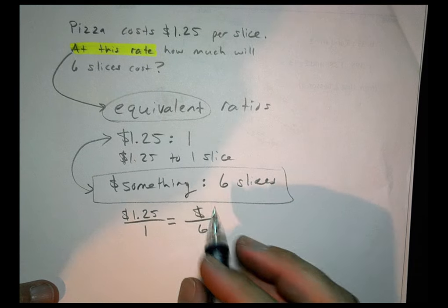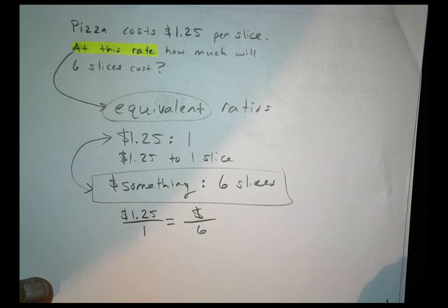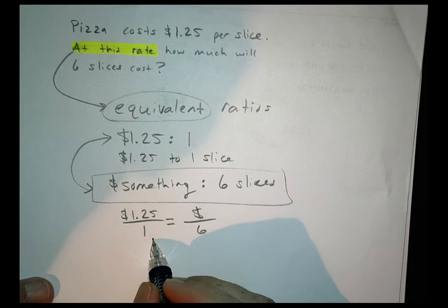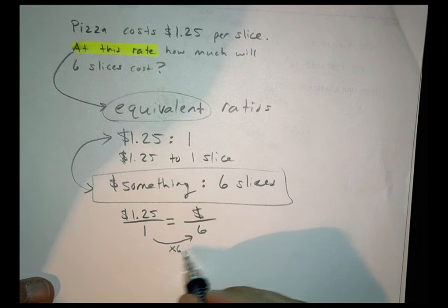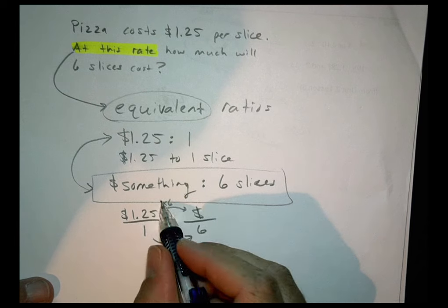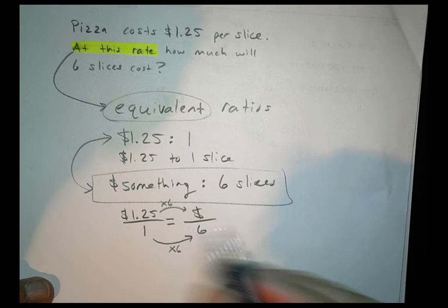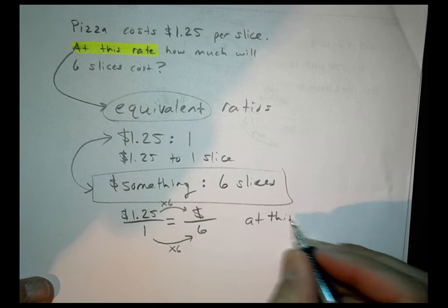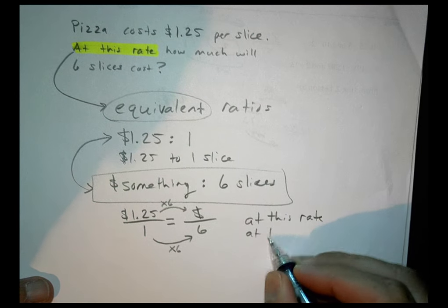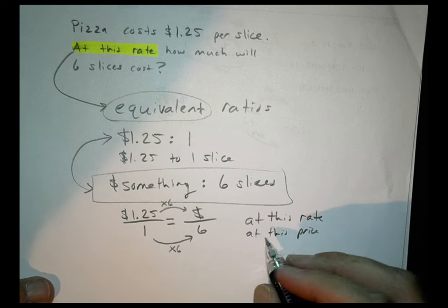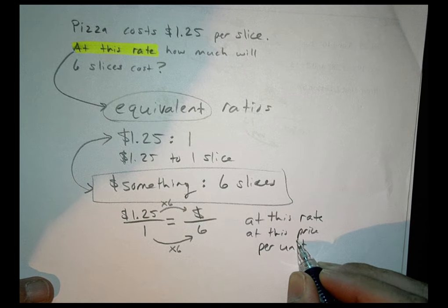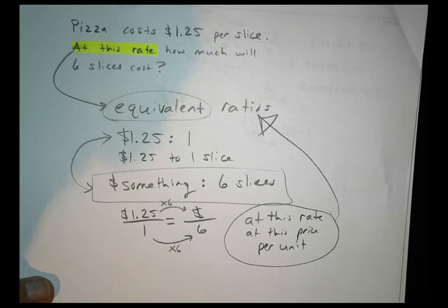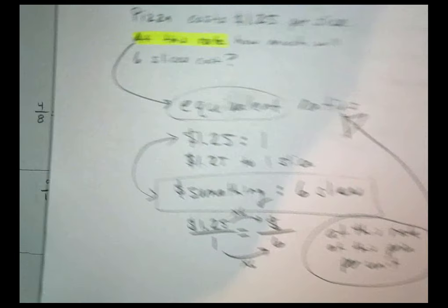There are a couple of ways to make the connection. If there's a simple relationship — one times six — then we follow the same pattern on the other side and multiply by six. So $1.25 times six gives us our answer. The phrases 'at this rate,' 'at this price,' and 'per unit' are all the same idea: can you find an equivalent ratio?